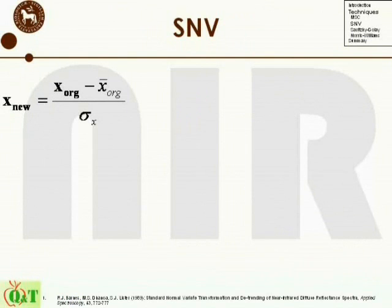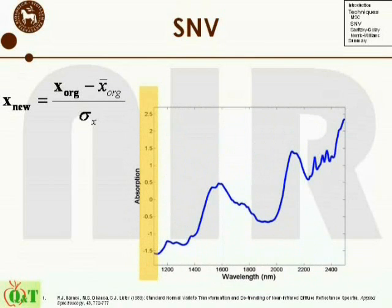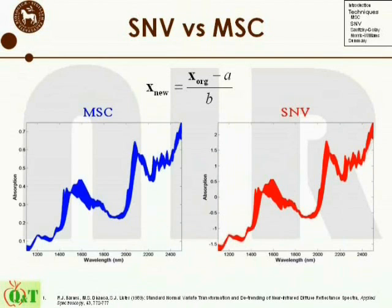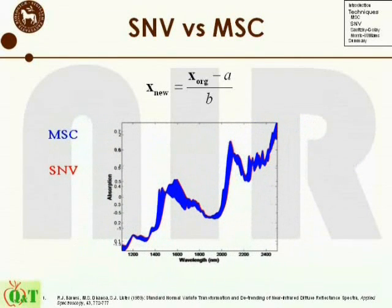Standard normal variate, or SNV, is a simple scatter correction technique which uses the same type of equation as basic MSC. However, opposed to MSC, SNV does not use anything but the spectrum at hand during the preprocessing step. SNV corrects the original spectrum by subtracting the mean value of the spectrum and dividing by the standard deviation. By looking at the effect on the raw spectrum, the only thing which changes is the value on the y-axis. However, the correction normally works very well. When SNV and basic MSC are applied to the same dataset and overlaid, the difference between the two is minimal.